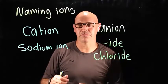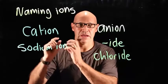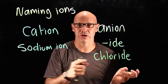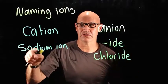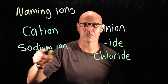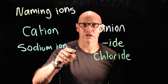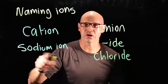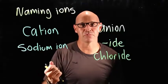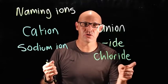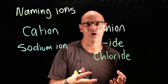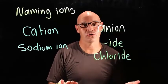The way that you can tell the difference between an atom and an ion: if it's a cation, it ends in '-ion' — sodium ion. If it was just sodium, it would be the atom we're talking about. Chloride is the ion of chlorine.